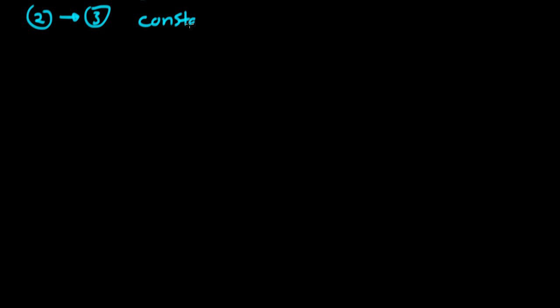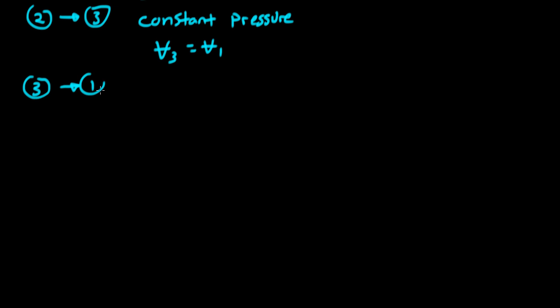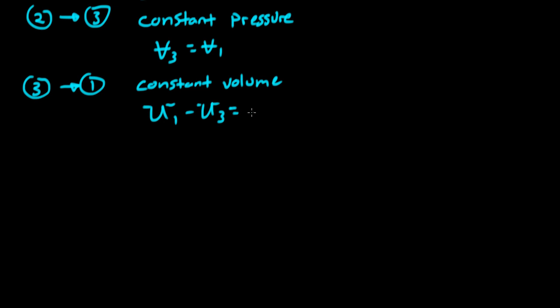Looking at the process from state 2 to state 3, we're told that we have a constant pressure process. We're also told that volume 3 is equal to volume 1. Finally, we have a process that goes from state 3 to state 1, which occurs at constant volume. We're told that the change in internal energy from state 3 going to state 1 is equal to minus 3549 kilojoules.